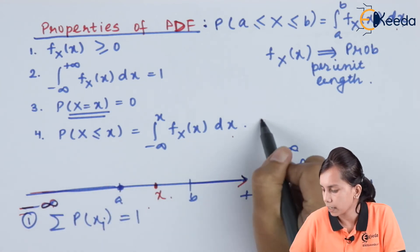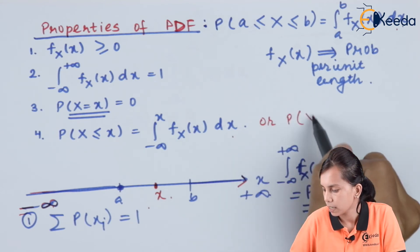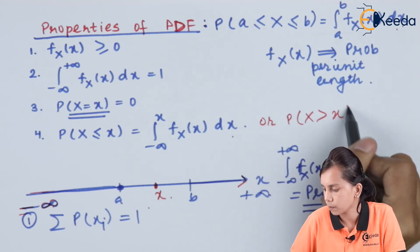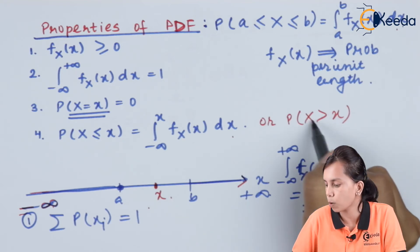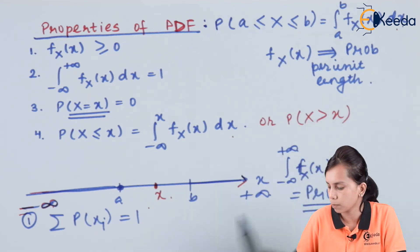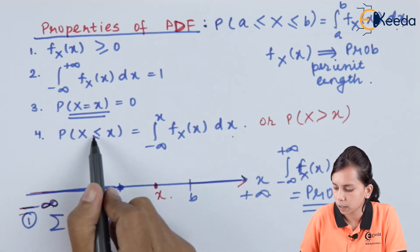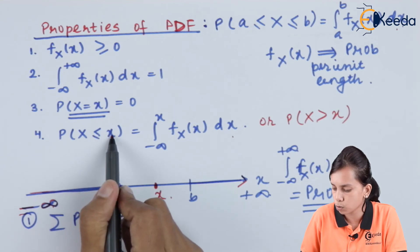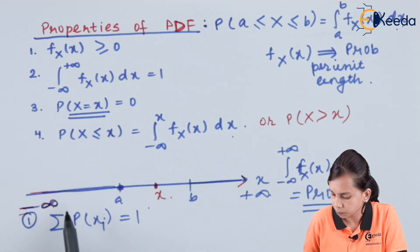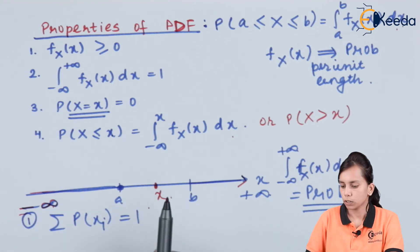Similarly, if we take the case of the probability that capital X is greater than small x, then the limits will be from x to infinity. And when capital X is less than or equal to x, the limits will be from minus infinity to x.